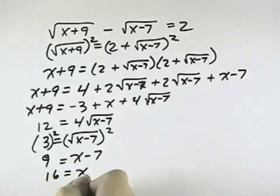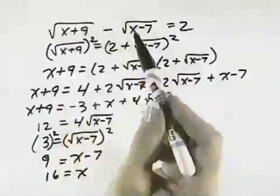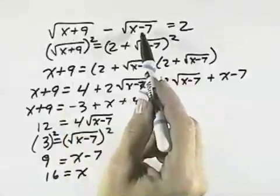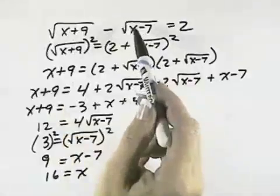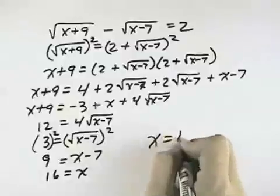But I do want to verify that that is indeed a solution. So 16 plus 9 is 25, the square root is 5, minus 16 minus 7 is 9, the square root is 3. So 5 minus 3 is 2. It does work. So x equals 16, or the solution set is the value 16.